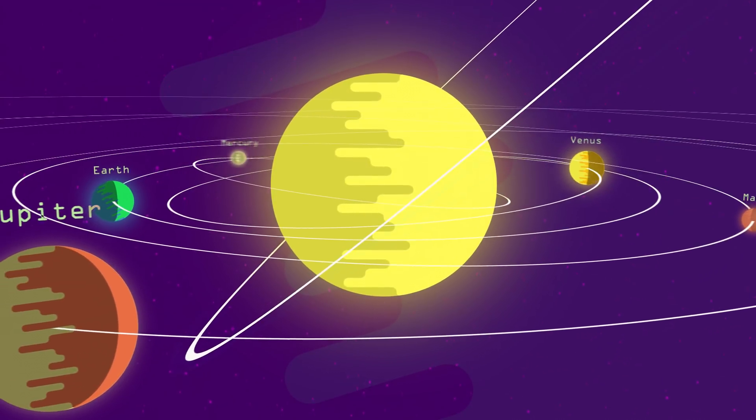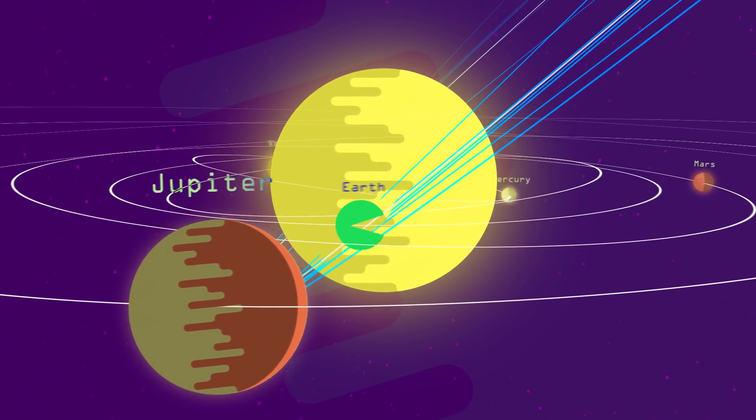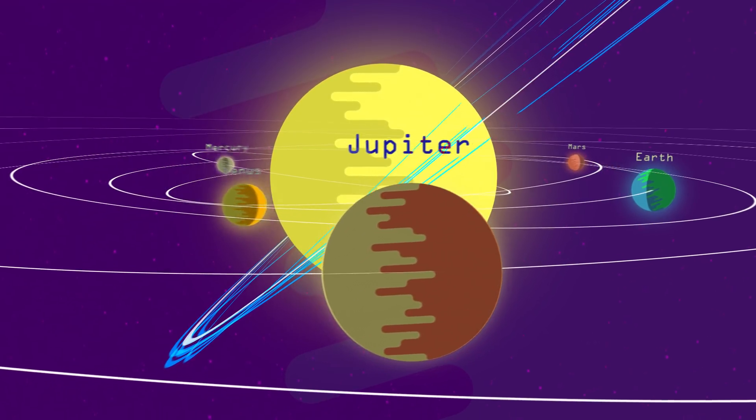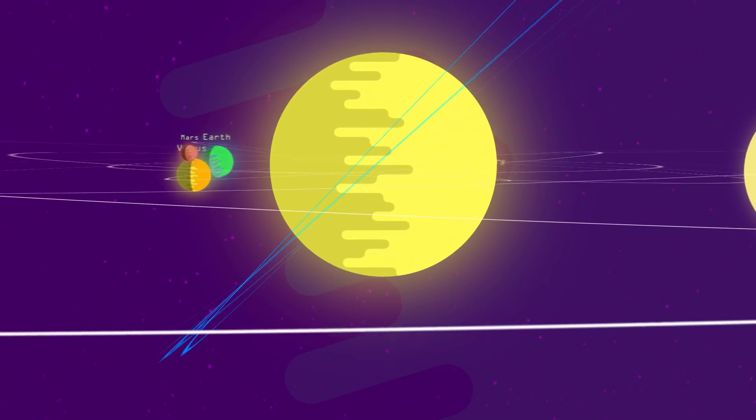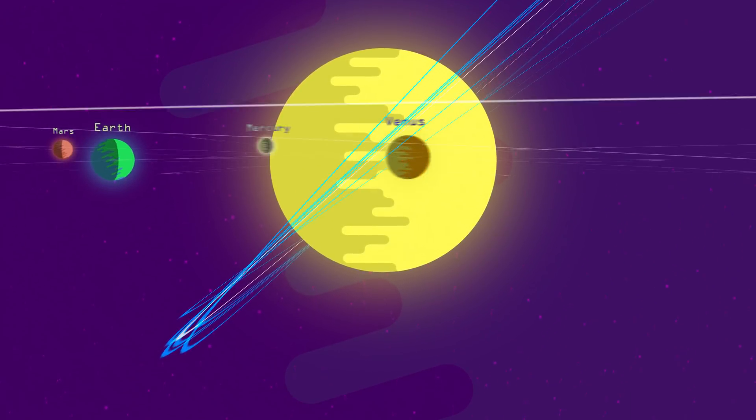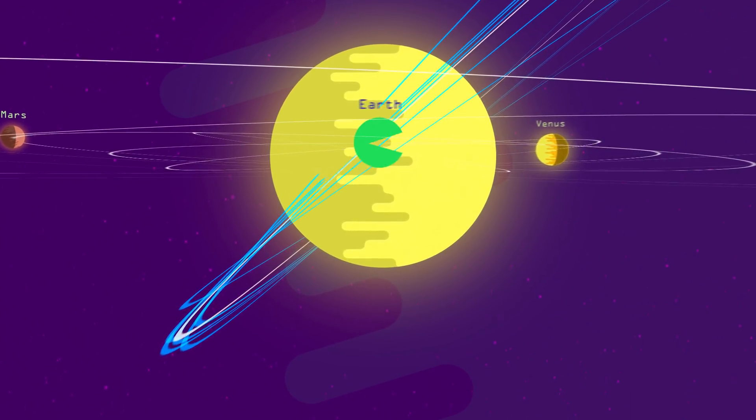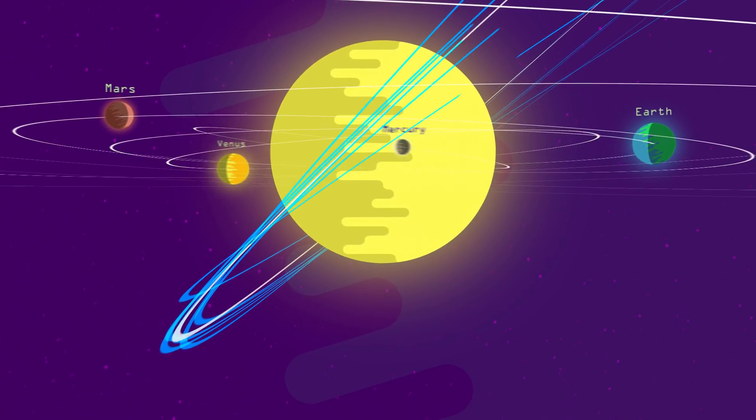Each year, when Earth passes through this meteoroid stream, we intercept all the specks of dust and rock left behind, and a meteor shower is the result. So even hundreds of years after a comet has passed through our solar system, the Earth can continue to enjoy a meteor shower every year, around the same time when we pass through the comet's old orbit.